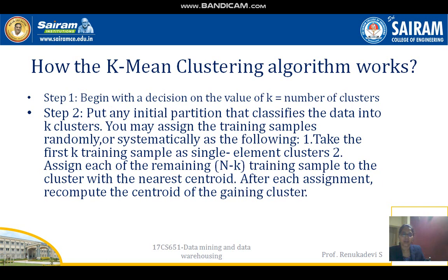The K-means algorithm works as follows: First, decide on the value of K, the number of clusters. Next, set an initial partition that classifies the data into K clusters — you may assign training samples randomly or systematically. The first step is to take the first K training samples as single-element clusters. Then assign each of the remaining N minus K training samples to the cluster with the nearest centroid. After each assignment, recompute the centroid of the gaining cluster.